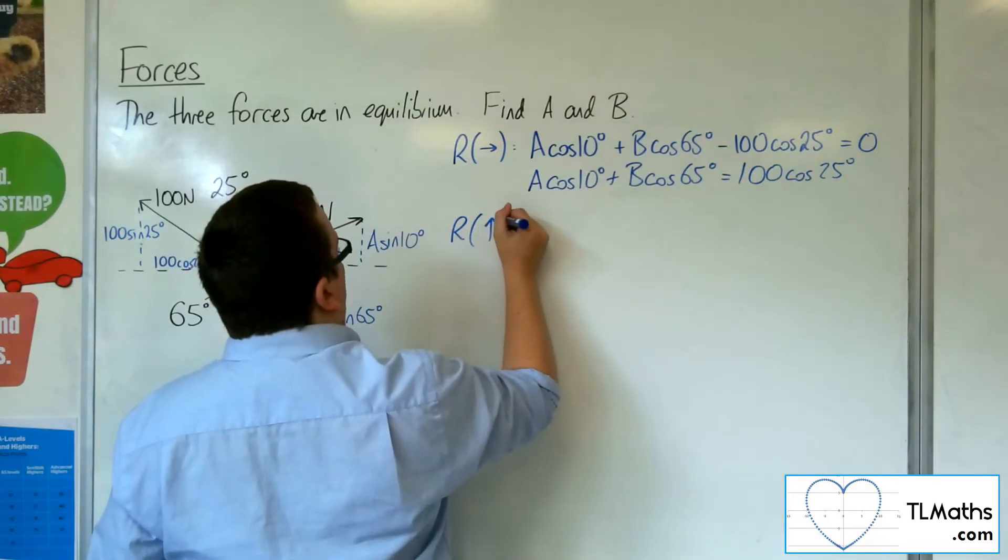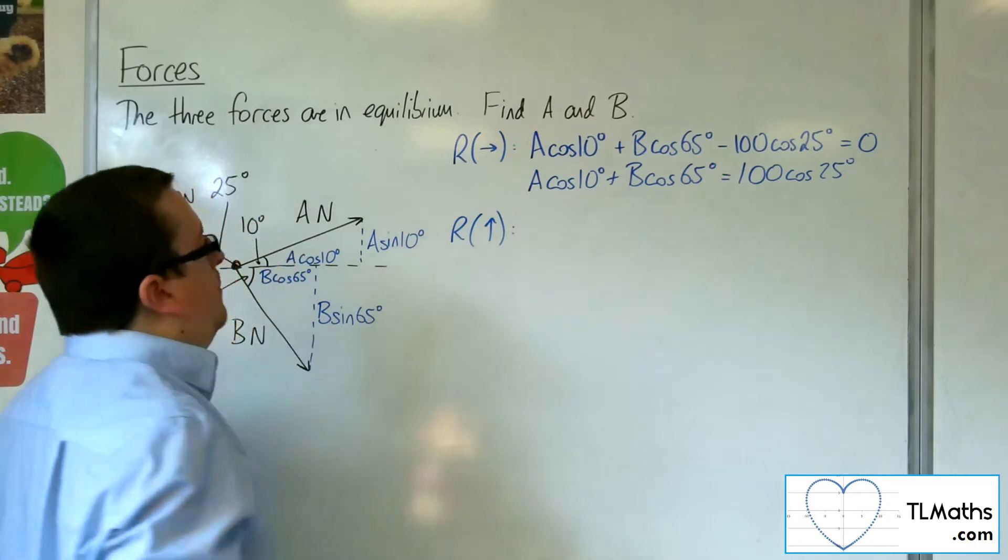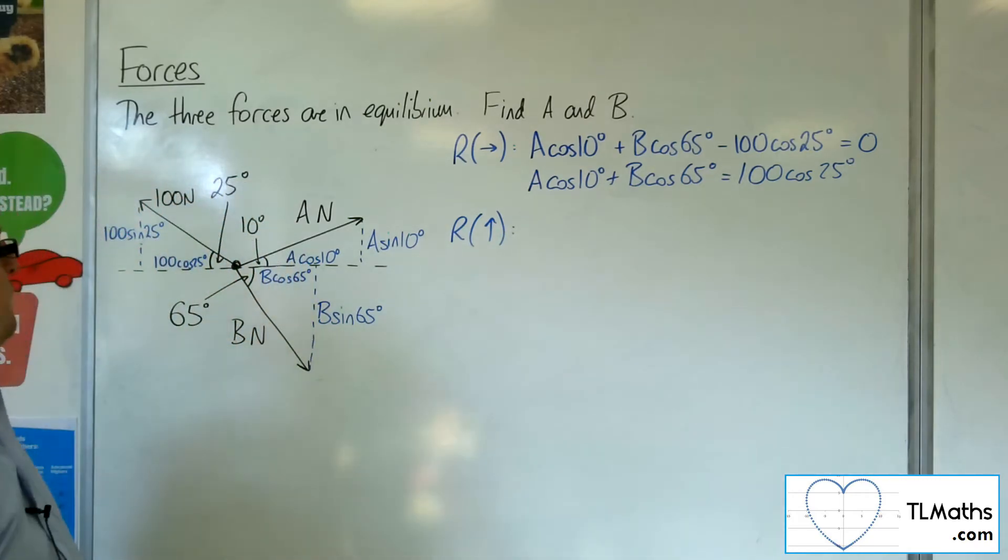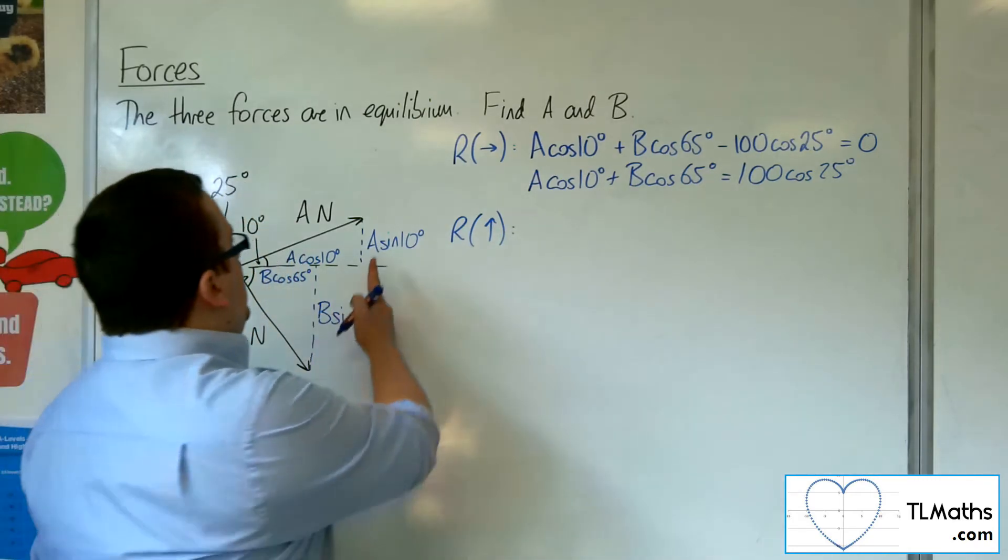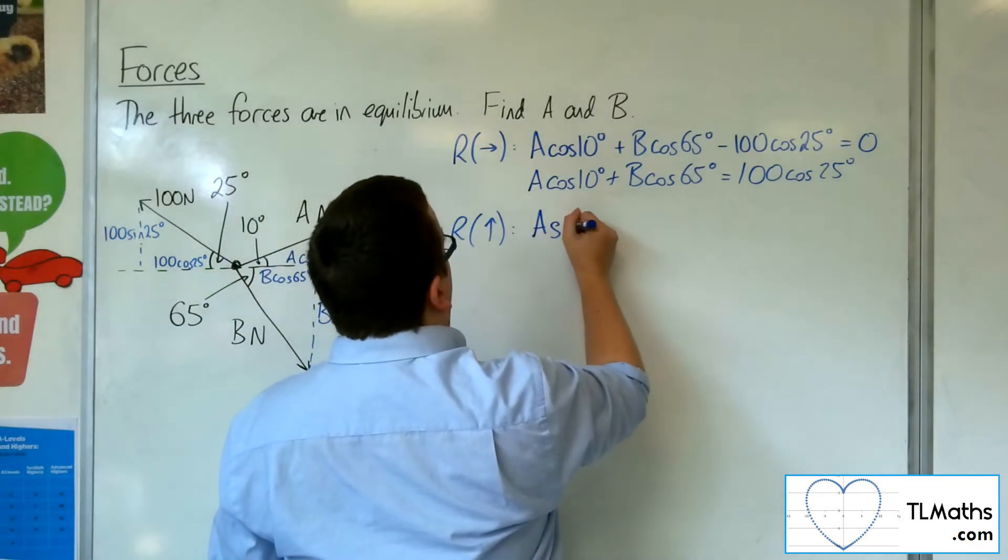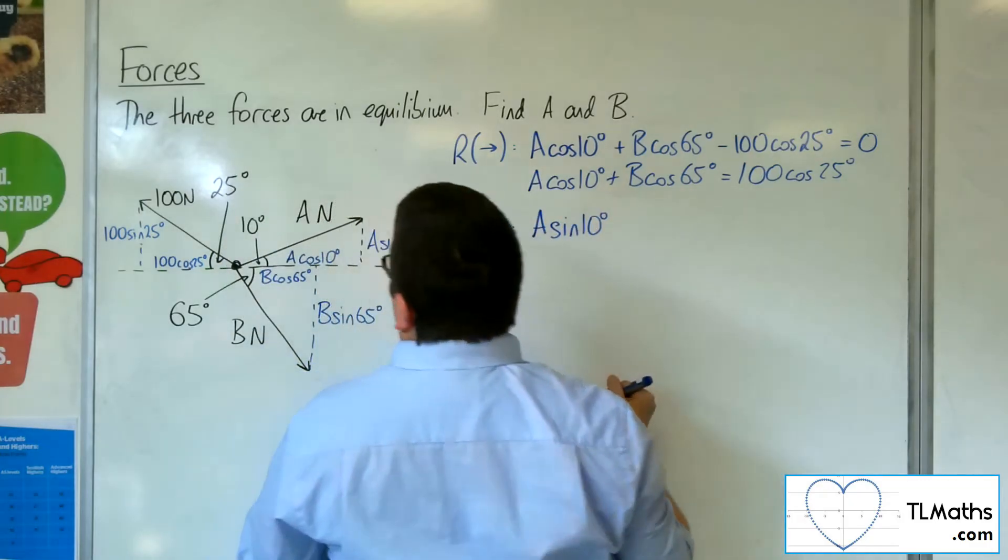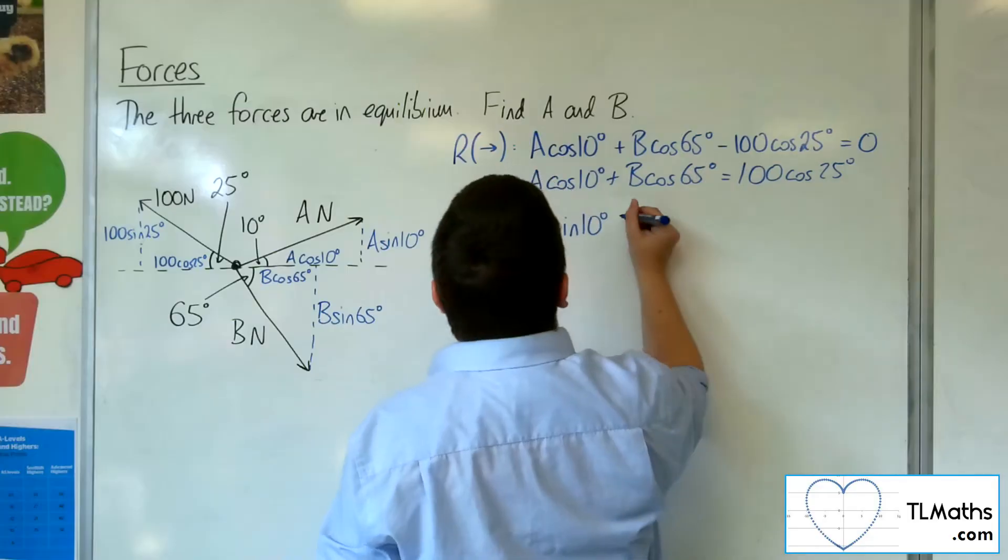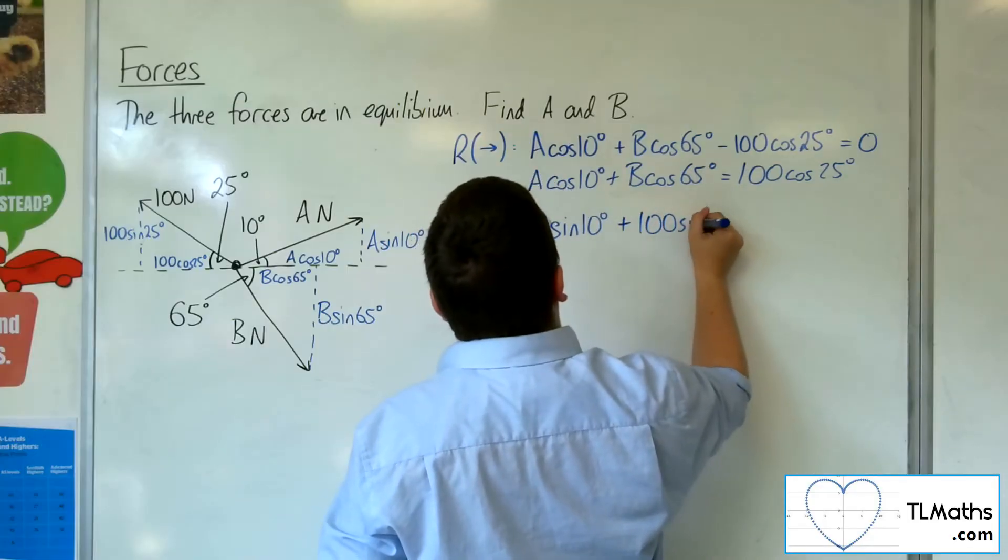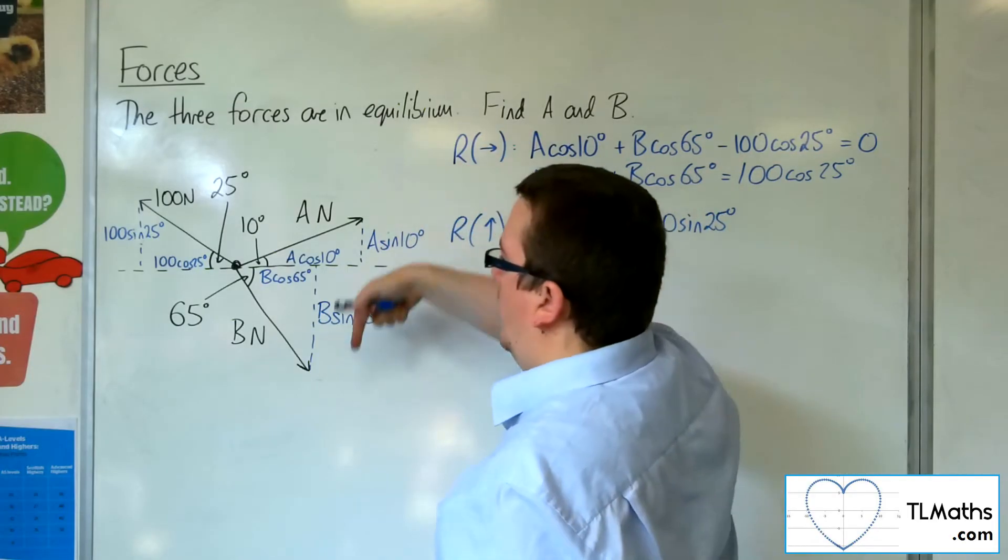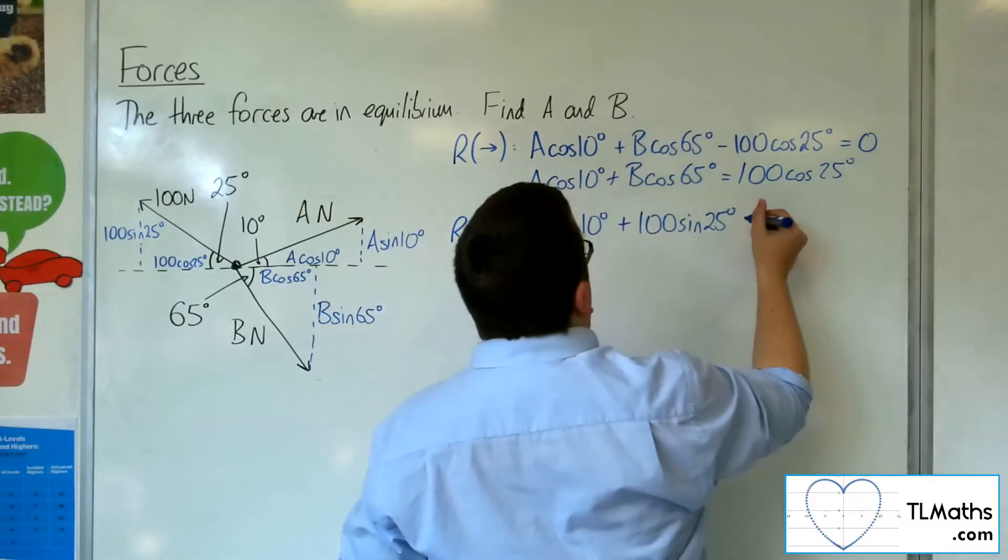And now I'm going to resolve vertically. I'm going to take up as positive. So we've got A sin 10. We've got 100 sin 25. And we've got, working against us, B sin 65.